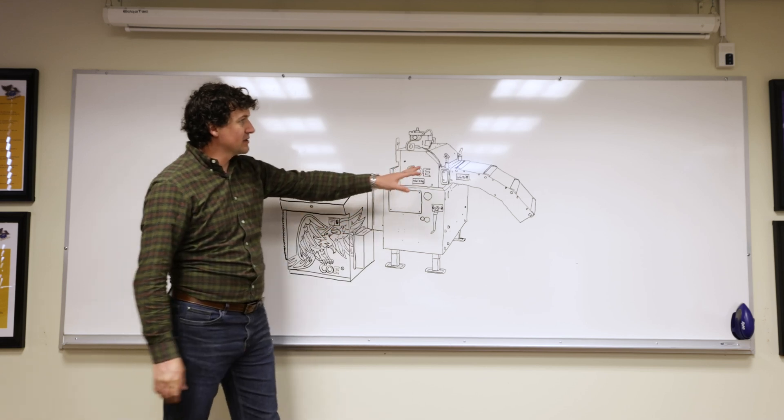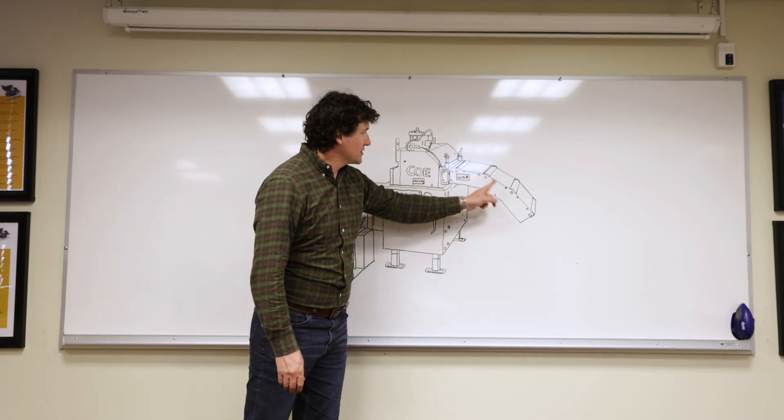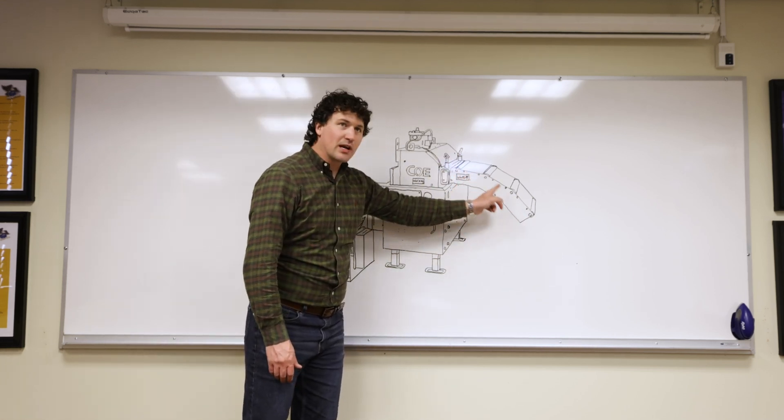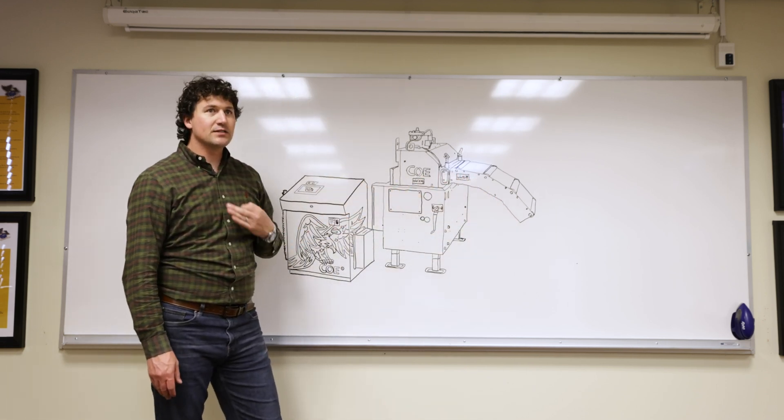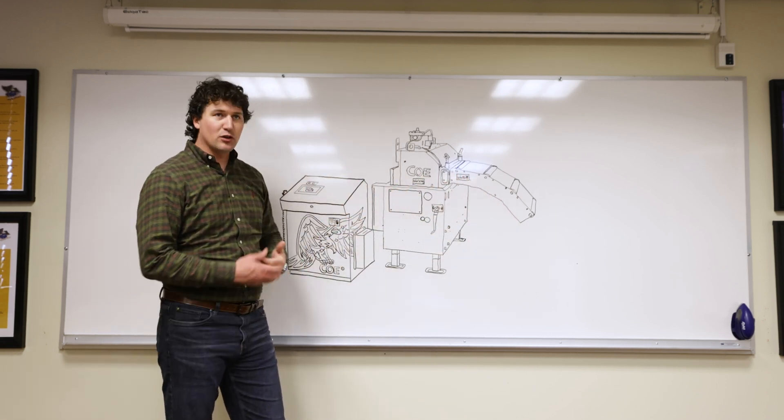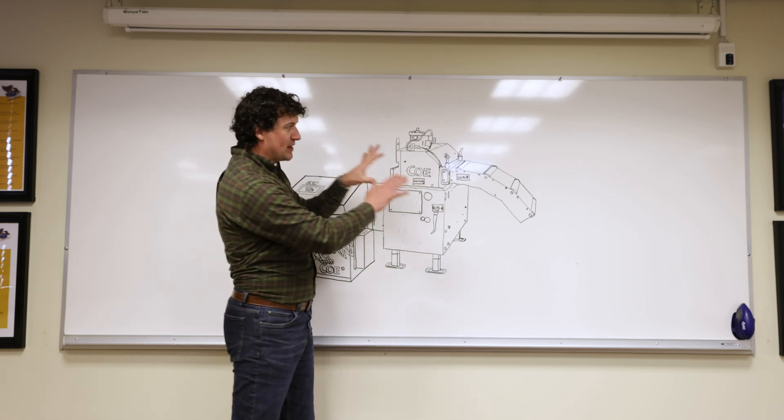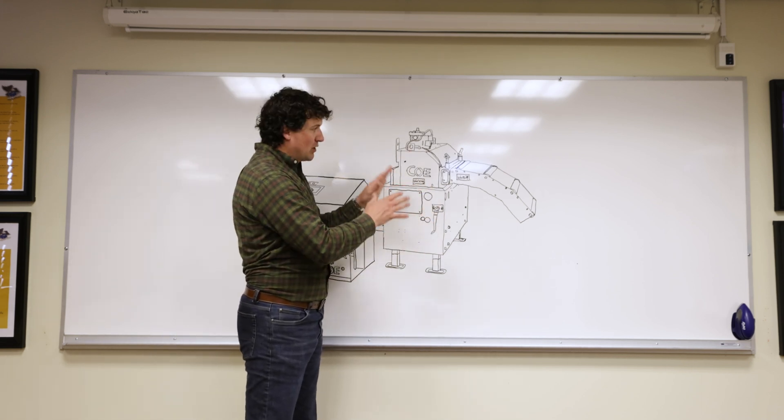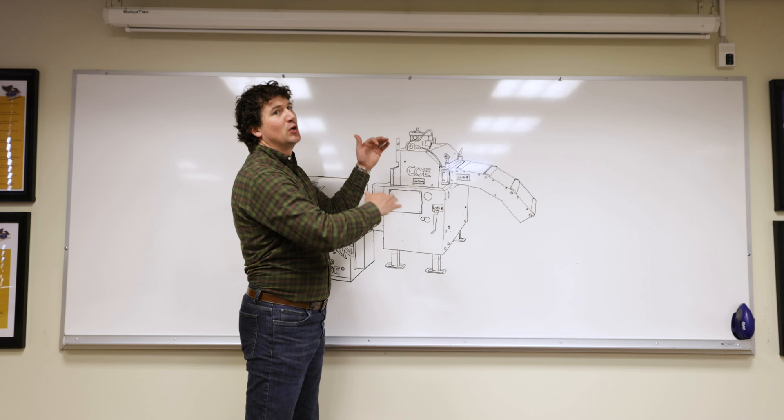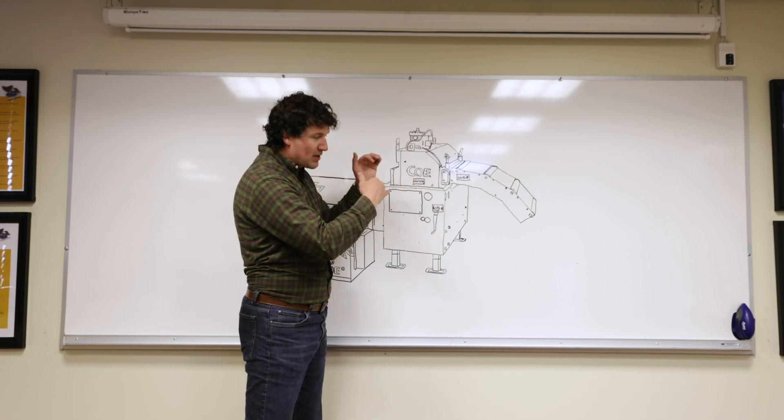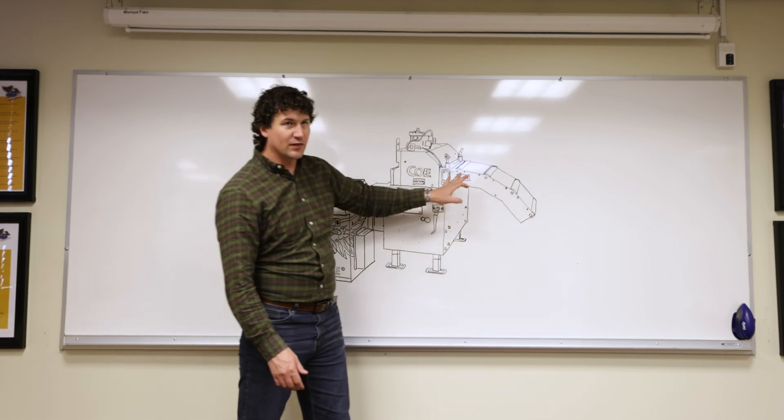The next thing I want to talk about is the catenary section. This catenary section has been mentioned on the straightener. It's designed very particularly to the different materials you'll be running. We don't exceed the minimum bend radius to put coil set back in the material or put a bend back in the material. It's designed very specifically.